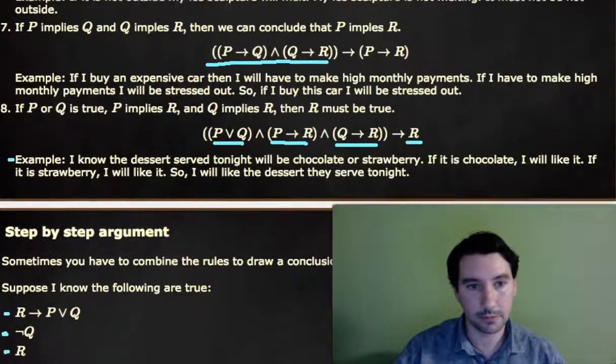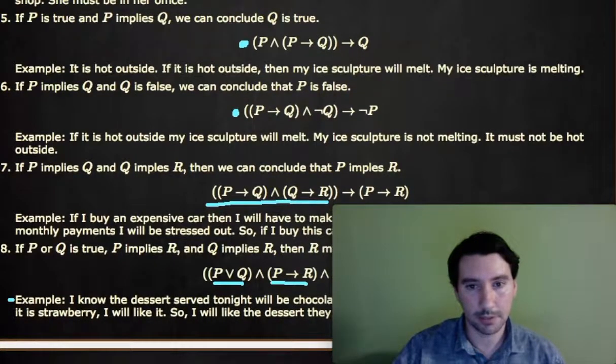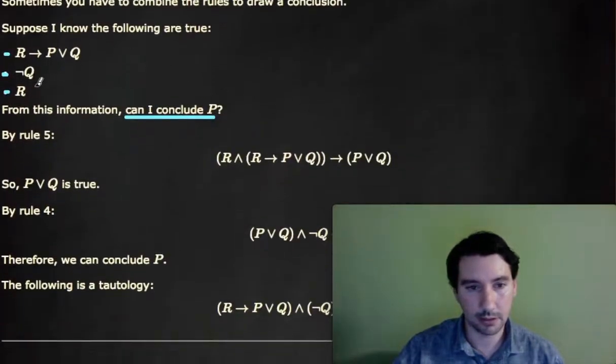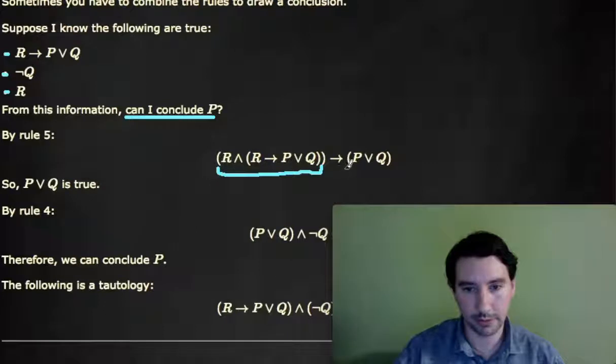Well, by the fifth rule above, which says P and P implies Q implies Q, I get to say R, which I know is true. And I also know that R implies P or Q. Combining these two, I know that then P or Q must be true. And so therefore, P or Q becomes another premise in my argument. Now I have four statements.